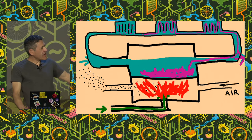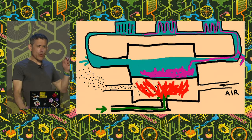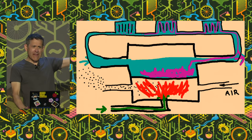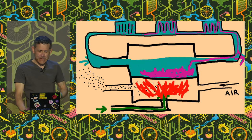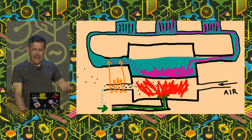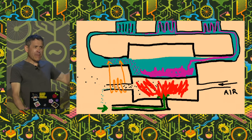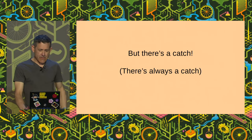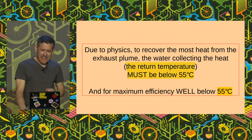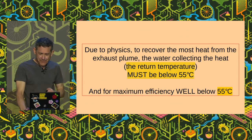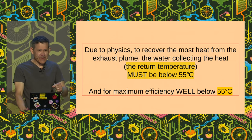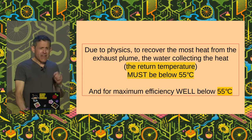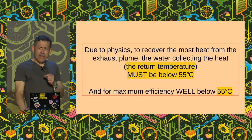Condensing boilers were invented to recover the heat that's in those two water molecules that are escaping normally straight outside your house, which then condense into a trickle of cool water as they give up the heat they contain. The condensing part captures the heat out of that vapour as it's escaping and puts it back into the return water, which heats it slightly, so it saves gas. But there's a catch: due to the latent heat of condensation, in order to get that water vapour to condense back into water, the return water's got to be below 55 degrees Celsius, otherwise nothing happens.